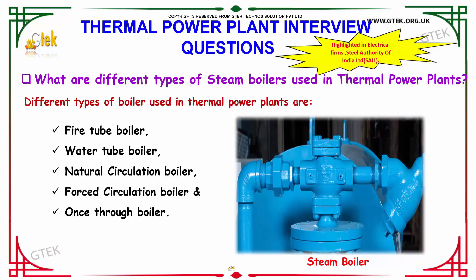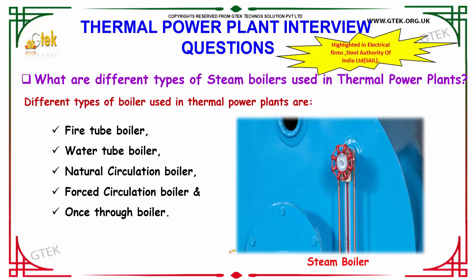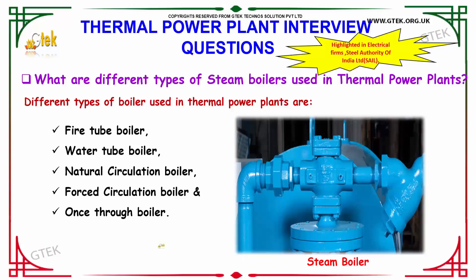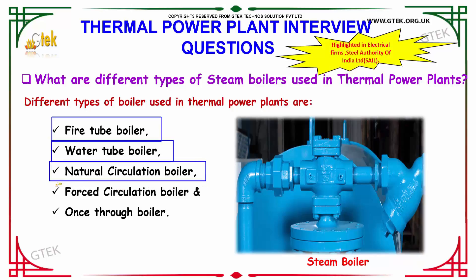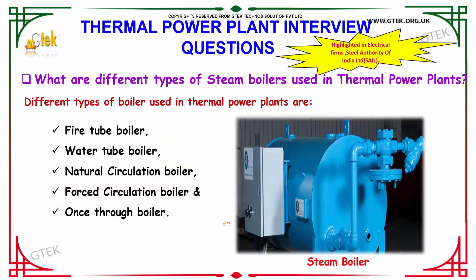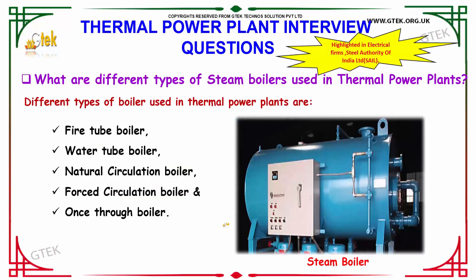What are the different types of steam boilers used in thermal power plants? The different types of boilers are: fire tube boiler, water tube boiler, natural circulation boiler, forced circulation boiler, and once-through boiler.